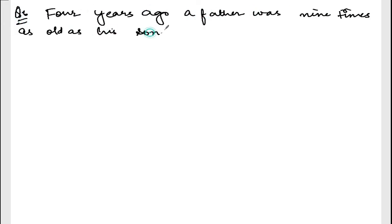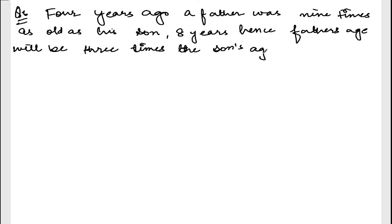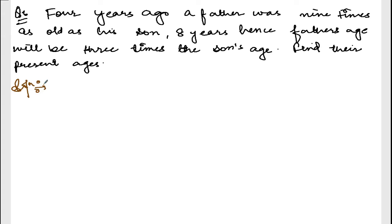We are doing exercise 4.3, question number 6. Let me write down the question. 4 years ago, a father was 9 times as old as his son. And 8 years hence, father's age will be 3 times the son's age. Find their present age.